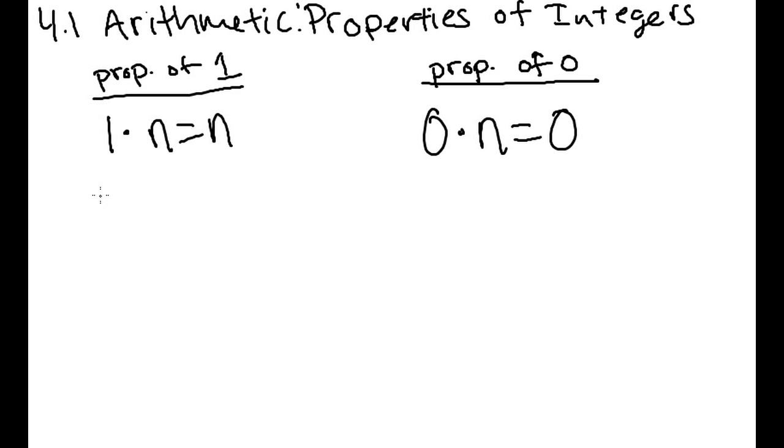Now there's another property you need to know. If you have n times 1 over n, that equals 1. That's very helpful when using fractions, because 5 times 1 over 5 is equal to 1.